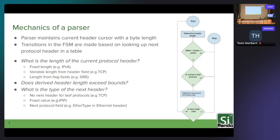The parser faces three basic questions. First, what is the length of the current protocol header? Some are fixed length — Ethernet and IPv6 — while others are variable length, such as TCP and IPv4, where the header length is in a field in the packet and may require arithmetic to compute. There are also cases where the header length is determined by the contents of the packet. A great example is GRE flag fields: the presence of a flag indicates the presence of a field, so we look at the flags, add up the lengths for all set flags, and that gives us the GRE header length.